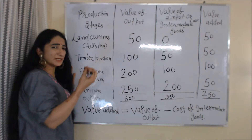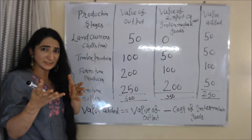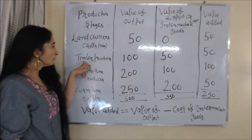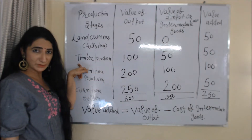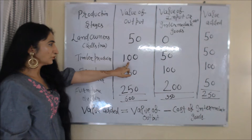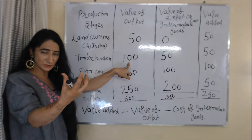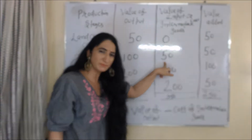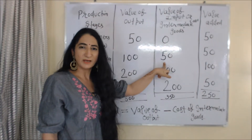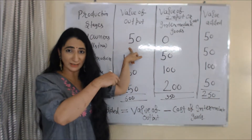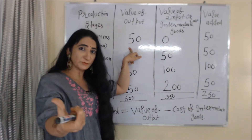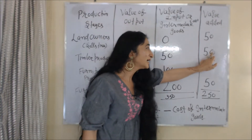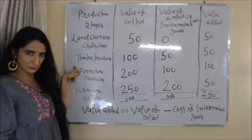Now, the timber producer makes timber from these trees and sells this timber to the furniture producer at rupees 100. How much value is added by the timber producer? Value of output is 100 — the price at which they sell timber in the market — and the cost of intermediate goods is 50, because at 50 rupees he bought trees from the land owner. So 100 minus 50 equals 50. This 50 rupees is value added by the timber producer.